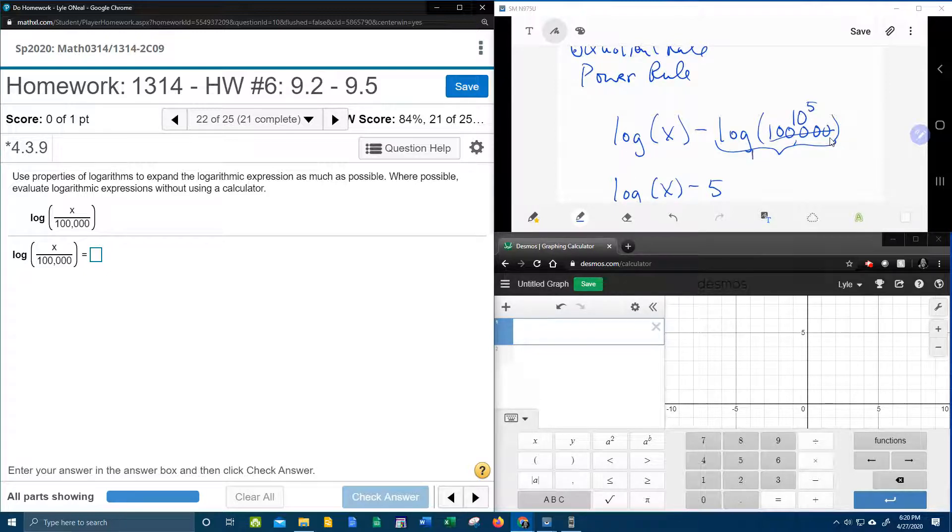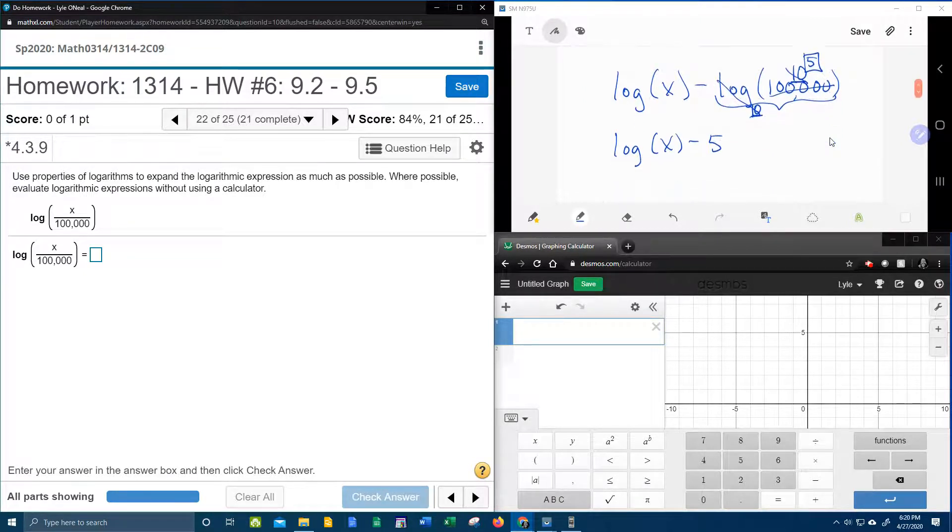And then remember the log is log base 10. Notice these bases match. So when the bases match, they cancel and the exponent is the answer. That's how you could do it if you don't have a calculator handy.